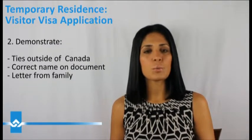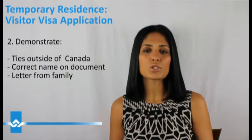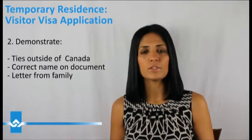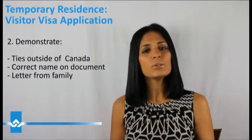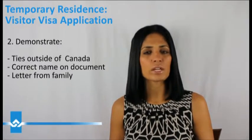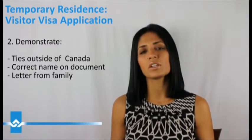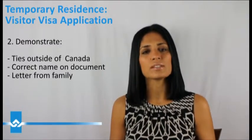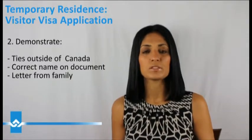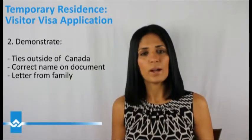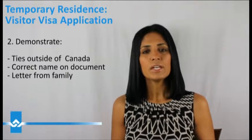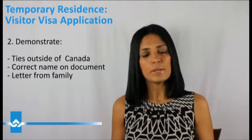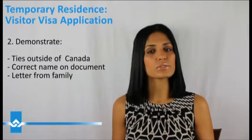The second thing is demonstrating your ties outside of Canada. This is important because it gives the immigration officer more reasons to believe that you will exit Canada at the end of your authorized date. When you include ties to your home country, make sure the visa document is under your name. Sometimes clients include bank statements, but the bank statement makes no mention of a name or address — it's just an account number. Keep these things in mind because the officer has to confirm that the tie is yours.